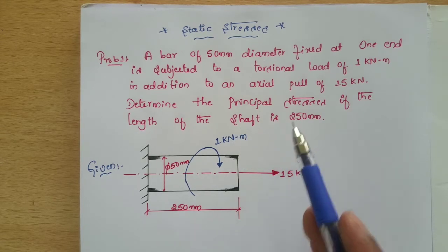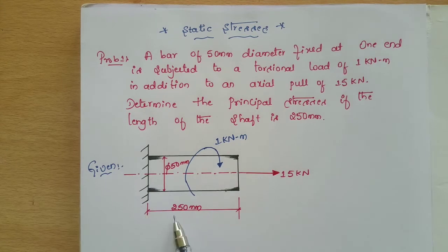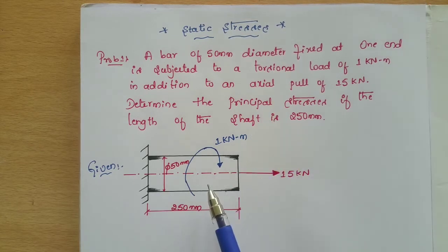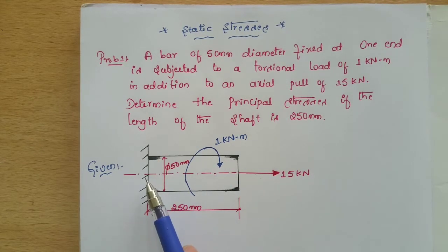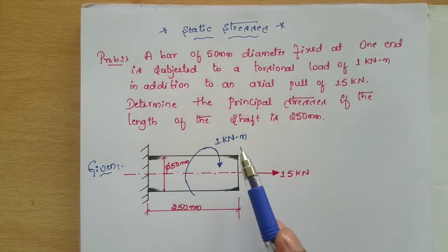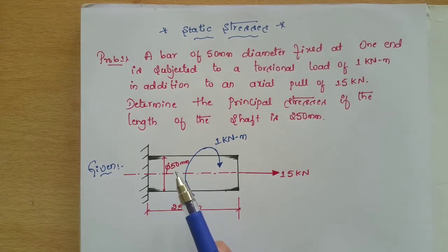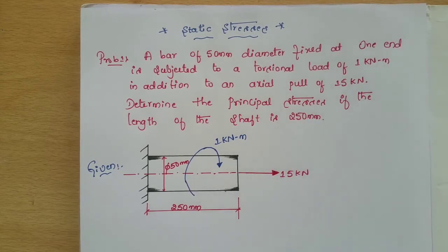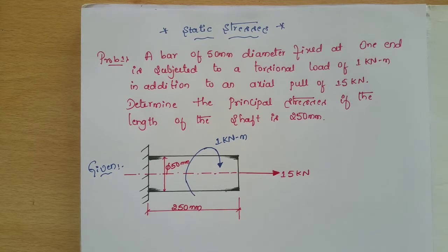The length is given as 250 mm. No sketch is provided in the problem, so by looking at the problem we need to draw a sketch. The bar is fixed at one end, with an axial pull of 15 kilo Newton and a twisting moment of 1 kilo Newton meter. The diameter is 50 mm and the length is 250 mm. We need to find the maximum principal stress, minimum principal stress, and maximum shear stress.